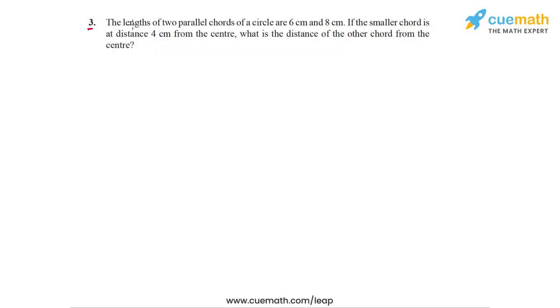In question 3, the problem statement says that the lengths of two parallel chords of a circle are 6 cm and 8 cm. The shorter one has a length of 6 cm and the longer one has a length of 8 cm. If the smaller chord is at a distance of 4 cm from the center, what is the distance of the other chord — the one with length 8 cm — from the center? So this is what we have to find: the distance of the larger chord from the center.